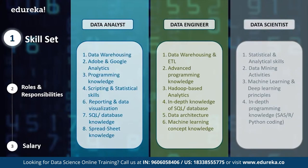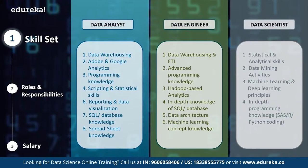Most companies hiring data engineers look for skills like data warehousing and ETL — extract, transform, load — advanced programming knowledge, and Hadoop-based analytics. They must also have in-depth knowledge of databases, data architecture, and machine learning algorithms. Finally, a data scientist needs to master both data stats and math along with in-depth programming knowledge of machine learning and deep learning. The ideal data scientist job description includes statistical and analytical skills, data mining, machine learning and deep learning principles, and in-depth programming knowledge in languages such as SAS, R, or Python.